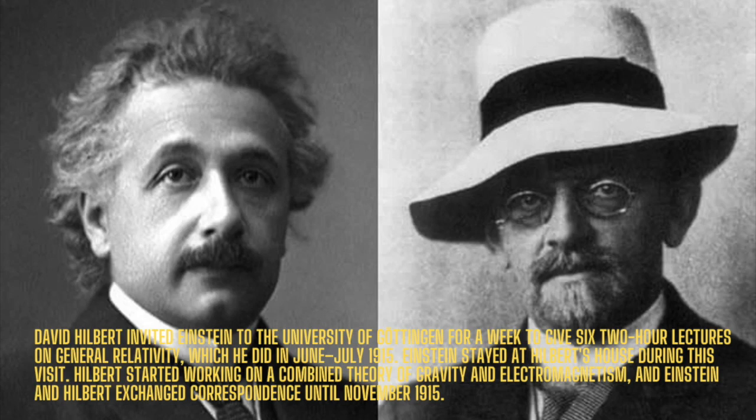After chopping and changing the equations in his theory several times in the autumn of 1915, Einstein made a monumental breakthrough. On the 18th of November 1915, he applied his new theory of gravitation to the old problem of Mercury's orbit, and found that it predicted for the extra advance of the perihelion exactly the 43 arc seconds per century that astronomers had measured and that had foiled every other attempt at explanation.